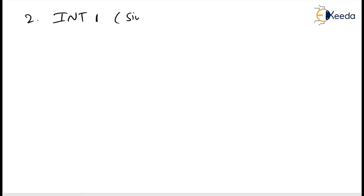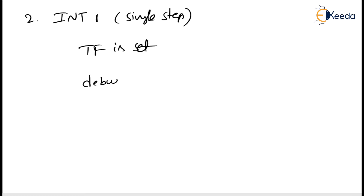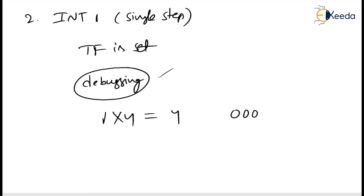The second dedicated interrupt, INT1, is called single step. The microprocessor executes this interrupt after every instruction if the TF (trap flag) is set. It puts the microprocessor in single step mode, meaning the microprocessor pauses after executing every instruction. This is very useful during debugging. The ISR is located at type 1 multiplied by 4 equals 4, so address 00004H in the IVT.